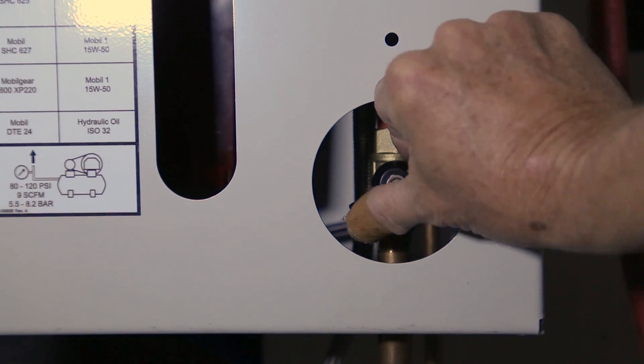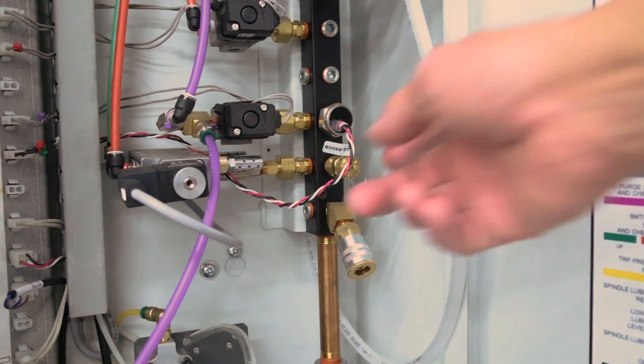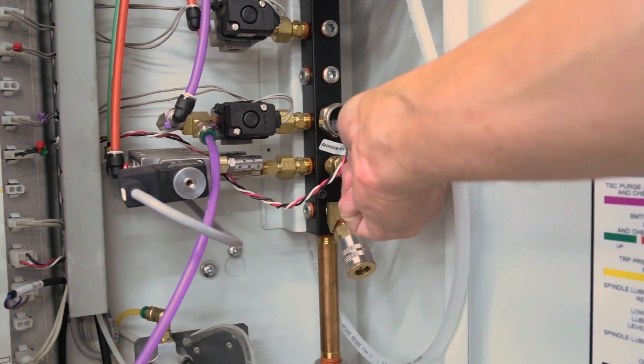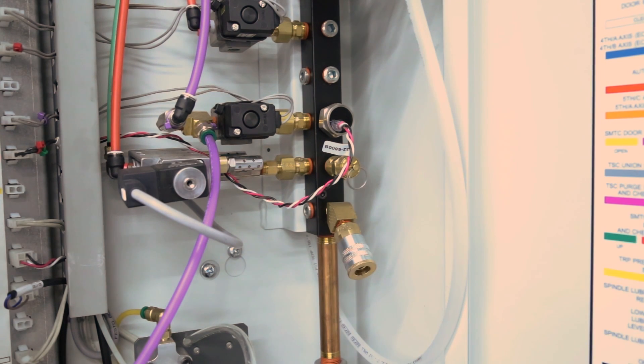First, turn off the air supply at the air lube cabinet. Pull the ring on the air lube manifold to completely release any air in the system.